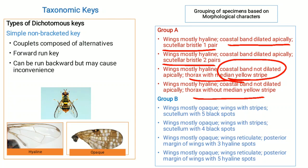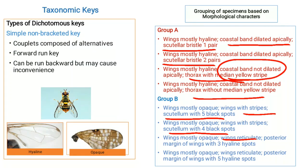Moving towards Group B, the wings are mostly opaque. Further subdivision is on the basis of wings with stripes or wings reticulate. Specimens with wings with stripes are further divided on the basis of scutellum with five black spots or scutellum with four black spots. Specimens with wings mostly opaque and reticulate are further divided on the basis of the posterior margin of wings consisting of three hyaline spots or five hyaline spots.